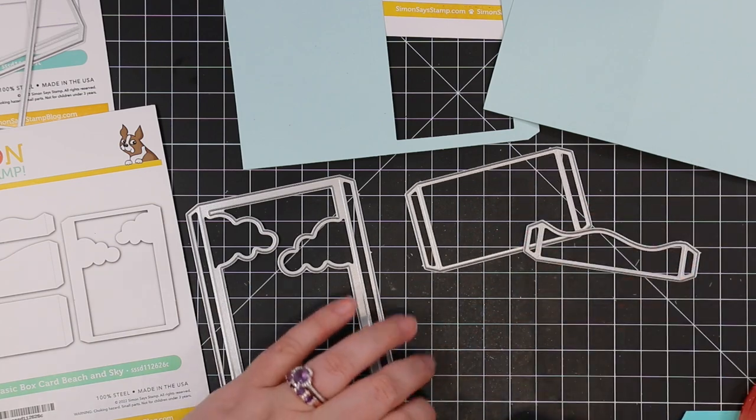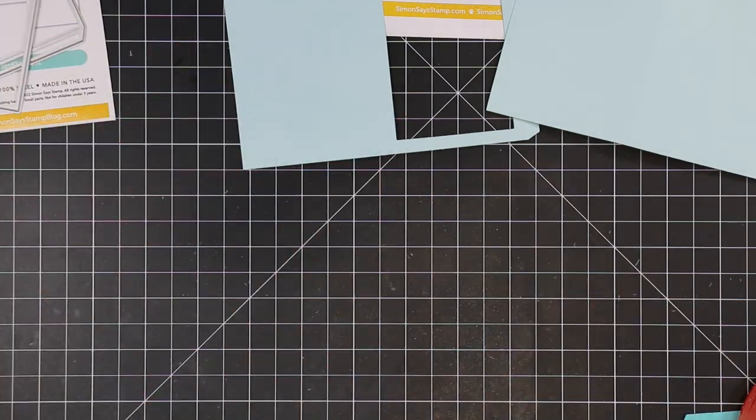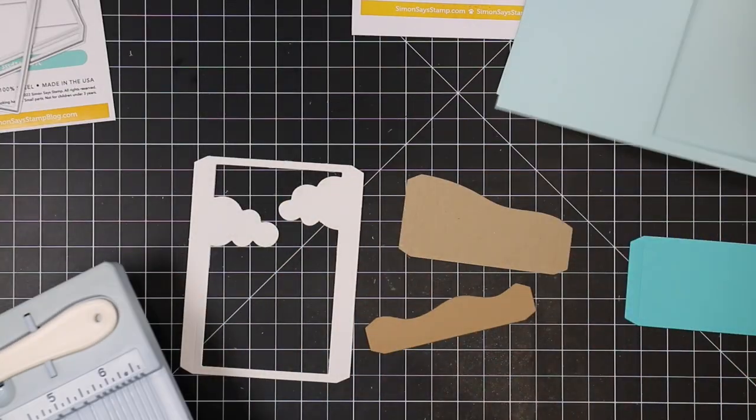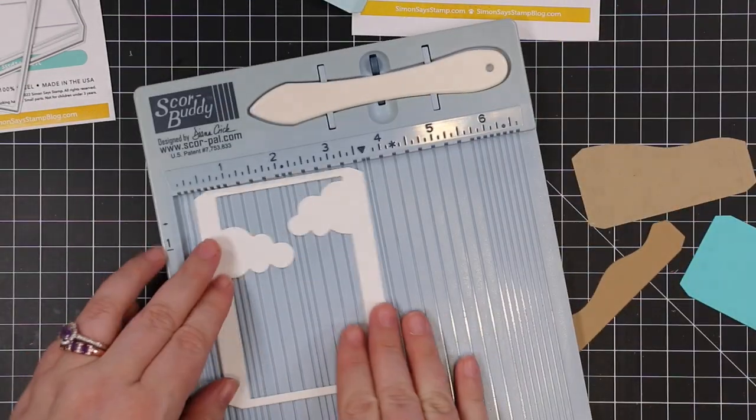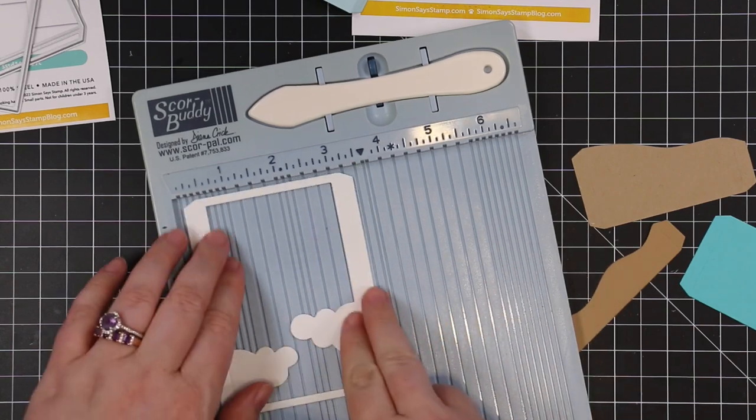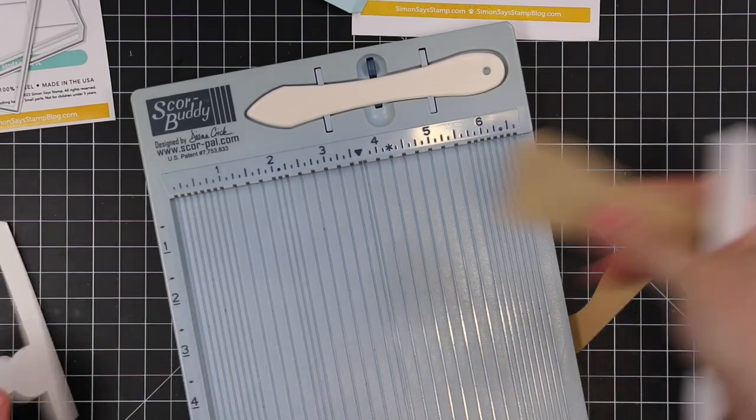To create my scene on the inside of the box card, I'm using the beach and sky add-on. There's actually several different add-ons that have been released over the last however many months since the first main set came out. There's like a star one and a cloud set and hearts and just really fun things.